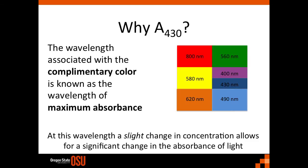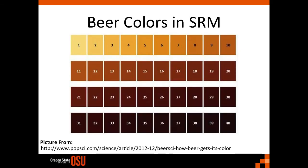So why 430 nanometers? We need to talk about complementary colors. Every color has its complement across from it — red to green, yellow to indigo blue, etc. The wavelength associated with the complementary color is known as the wavelength of maximum absorbance. Because we are operating at maximum absorbance, any slight change in concentration will result in a significant change in the absorbance of light. This occurs at 430 nanometers, which is the maximum absorbance for yellow — the color of some of the world's most popular beers. One of the challenges for beer color measurements is that there is no maximum or minimum absorbance; 430 was decided on because of the large amount of beers found at this color. Here is a diagram of the colors of different beers given in units of SRM.